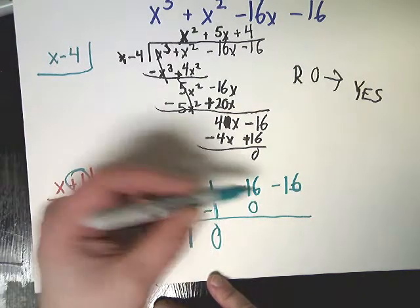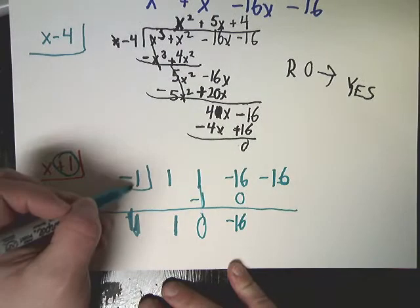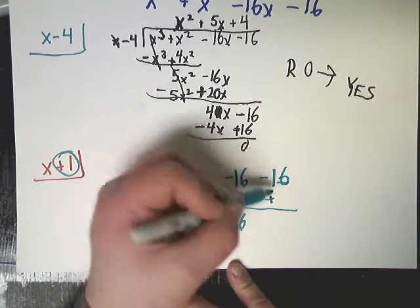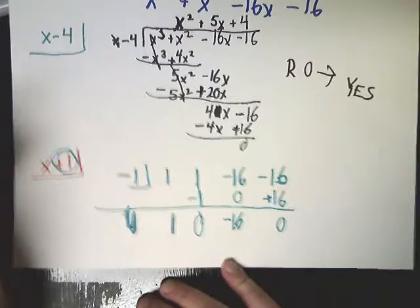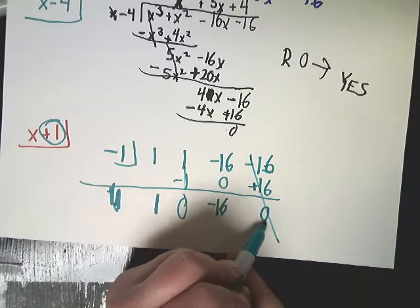Negative 1 times 0 is 0. Negative 16 plus 0 is negative 16. Negative 1 times negative 16 is positive 16. So you get a 0 there. Bam. That eliminates it out. You'll have a remainder of 0.